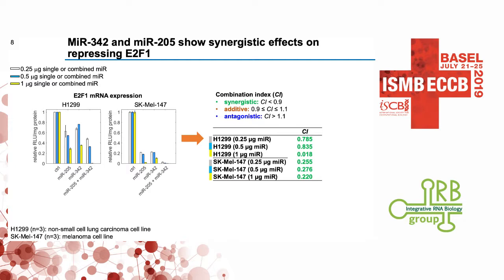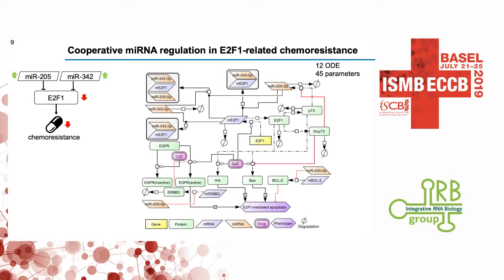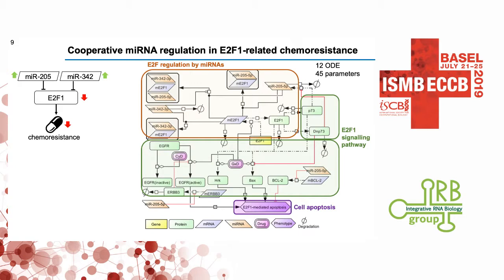Having validated this E2F1 regulation by cooperative microRNAs, the next question is: can we really benefit patients by using these two microRNAs in the context of chemotherapy resistance? To address this, we constructed a model built from our knowledge and understanding of E2F1-related apoptosis. It includes surrounding signaling pathways of E2F1, integrated microRNA-mediated regulation of E2F1, and a variable accounting for cell apoptosis. This model is composed of 12 ordinary differential equations and 45 parameters, characterized by our previous data or literature, to help understand the mechanism underlying E2F1-related chemotherapy resistance.